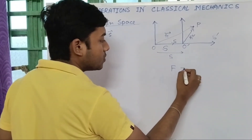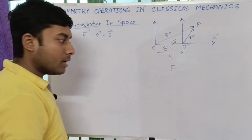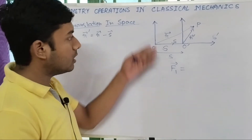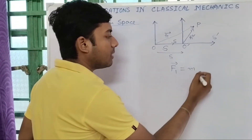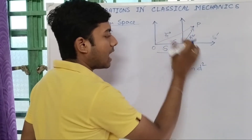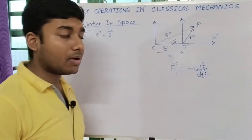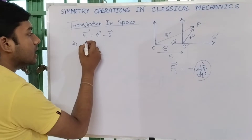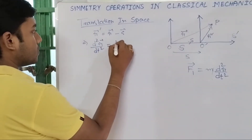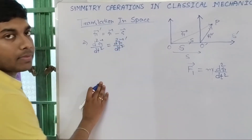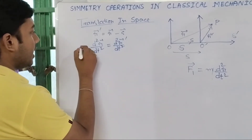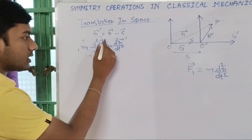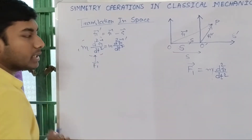We assume that Newton's law holds in frame S: F1 equals m d²r/dt². Now, is this equation also valid in S-dash? To find out, we double differentiate r-dash. Since r-dash equals r minus s, and s is a constant displacement, d²r-dash/dt² equals d²r/dt². Multiplying both sides by m gives: m d²r/dt² equals m d²r-dash/dt². This left side is F1.